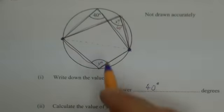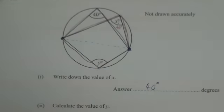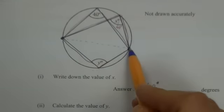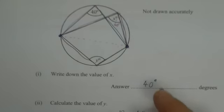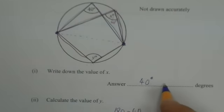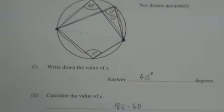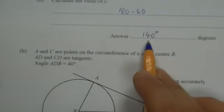Now they may well ask you for a reason. No reason is asked for here, but if they do ask you for a reason, in this one you would write angles in the same segment are equal. And in this one you would write opposite angles in a cyclic quadrilateral are equal.